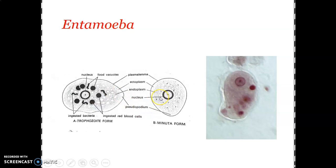The magna form develops from the small minuta form and enters the mucosal and submucosal layers of the intestinal wall by dissolving the tissues — that is why the species name is histolytica: 'histo' referring to tissues and 'lytica' meaning breakdown. With the lysis of tissues, the trophozoite form enters the mucosal and submucosal layers, making small wounds in the intestinal lining which may later develop into ulcers.